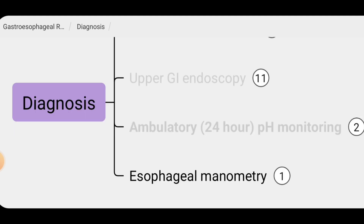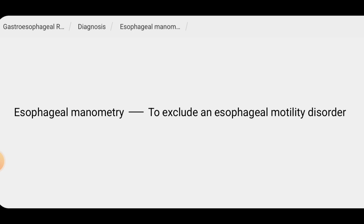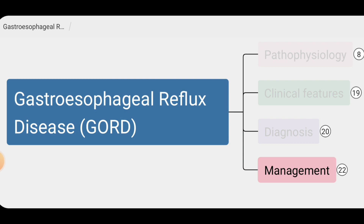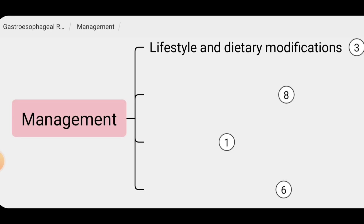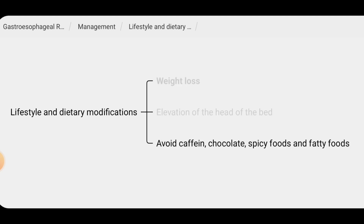We can also perform esophageal manometry to exclude any esophageal motility disorder. The management of GORD begins with lifestyle and dietary modifications. These include practices for weight loss, elevation of the head end of the bed while sleeping, and avoiding food triggers such as caffeine, chocolate, spicy foods, and fatty foods.